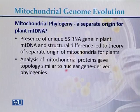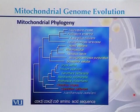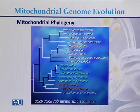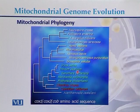Analysis of mitochondrial proteins gave a topology similar to nuclear gene-derived phylogenies. This phylogeny of the mitochondrial genome shows that certain groups of species share similar mitochondrial genomes, with distinct clusters of species whose mitochondrial genomes have similarity with each other.